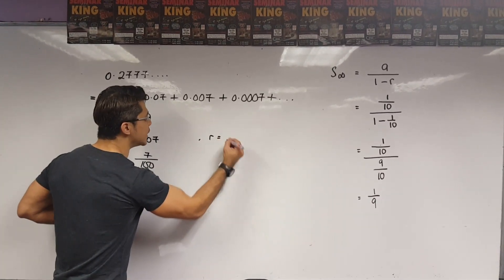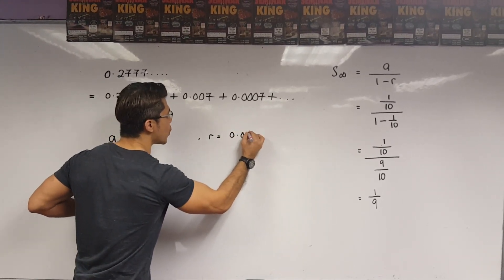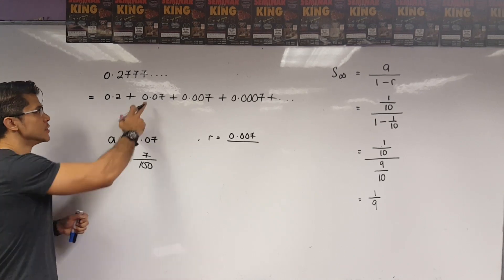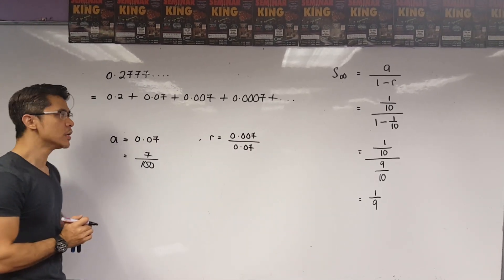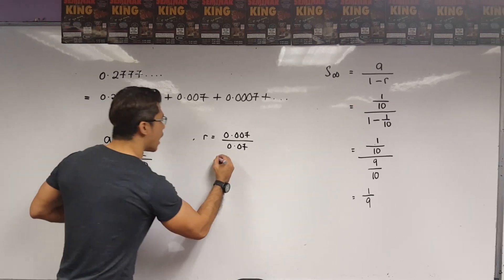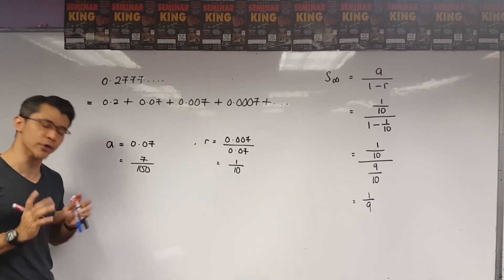And the R number, the common ratio, we obtain this by taking 0.007 and I divide that with 0.07. So, this will give me an R number of 1 over 10. Very good.